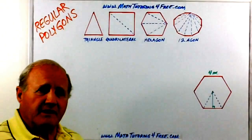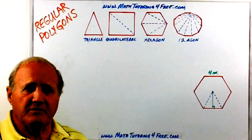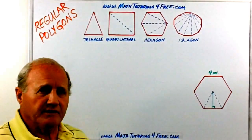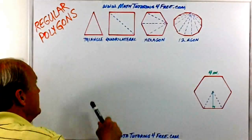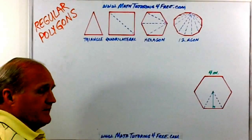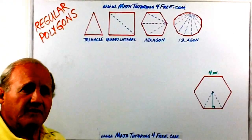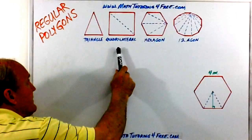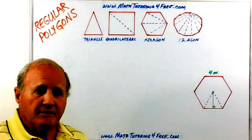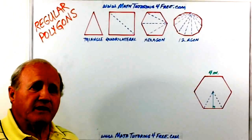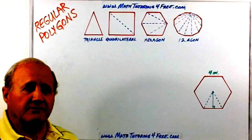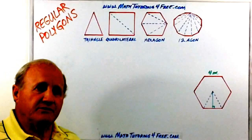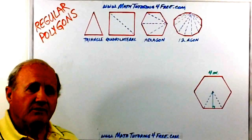Regular polygons have equal sides and equal angles. If we think about a triangle, of course we've got 180 degrees. If we look at a quadrilateral, if we draw a diagonal we break that into two triangles, and so the sum of the internal angles would be two times 180, or 360.